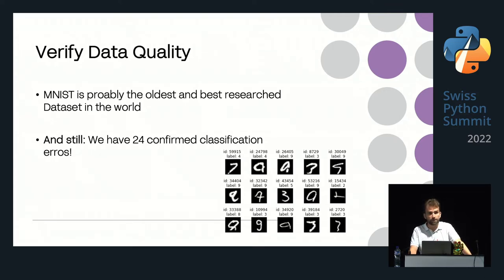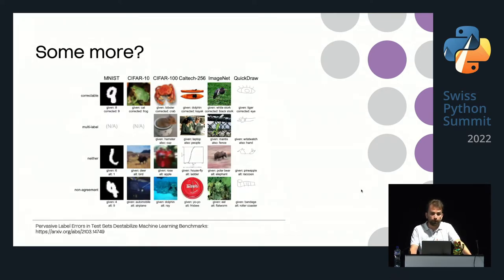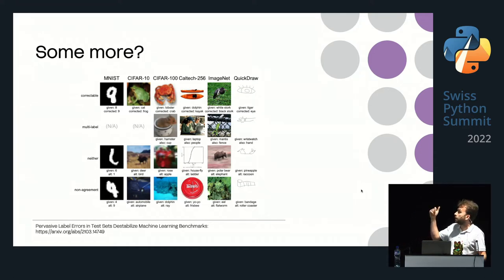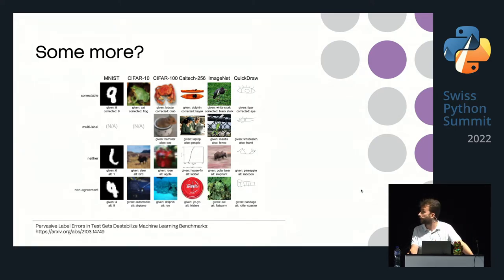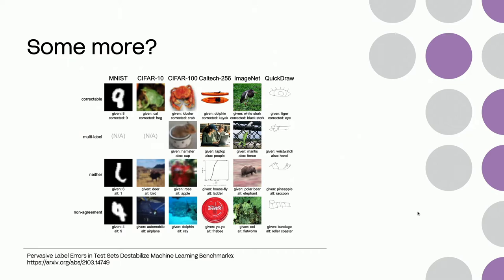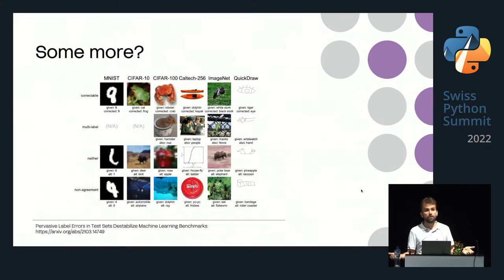Looking at images from six different datasets, many are ambiguous — they could be multi-label or neither. For example, a given six doesn't even look like a number — it could be an 'L' with lots of creativity, but an 'L' shouldn't be in a numbers dataset. There's also non-agreement: is that a four or a nine? In CIFAR-100, is the hamster-in-a-cup picture a hamster or a cup? It's kind of both.